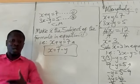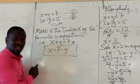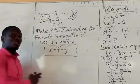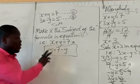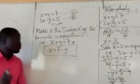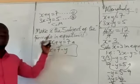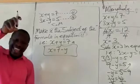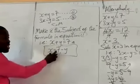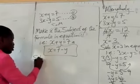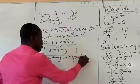Going back to the question: make x the subject of the formula in equation 1. We have x plus y equals 7. To make x the subject, we move plus y from the left-hand side to the right-hand side. The plus y automatically becomes minus y. So x equals 7 minus y. We are now going to substitute x equals 7 minus y into equation 2.